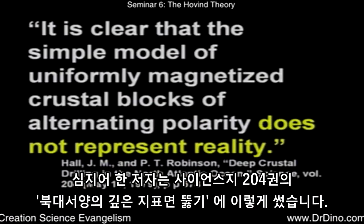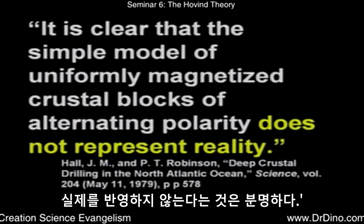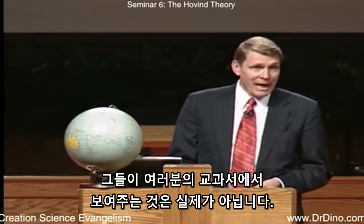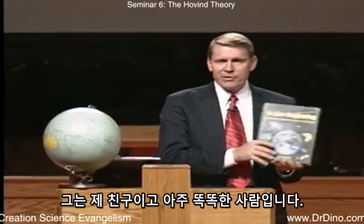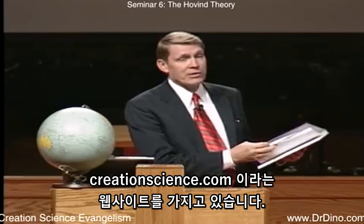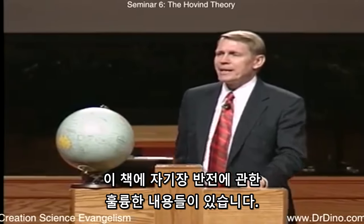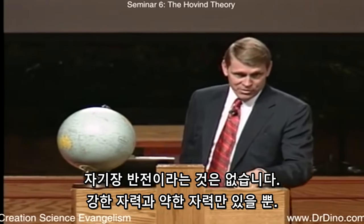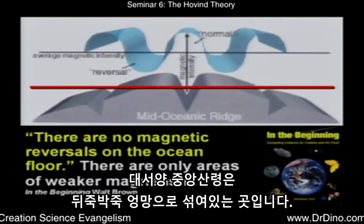Walt Brown has a great book called In the Beginning — I disagree with him on a couple of key things, but I highly recommend it. He has a Ph.D. in Physics and taught at the Air Force Academy; his website is creationscience.com. He has great material on magnetic reversals. There are no magnetic reversals — only stronger and weaker magnetism. It's actually a jumbled mess down at the Mid-Atlantic Ridge. The Earth has lost 10% of its magnetic strength in the last 150 years, and 40% in the last 1,000 years.